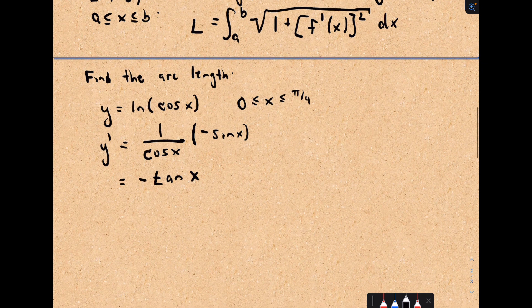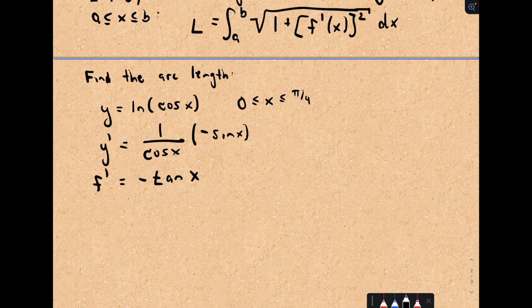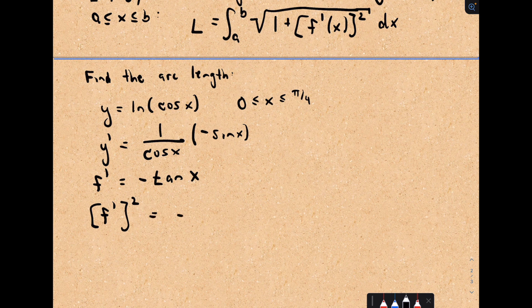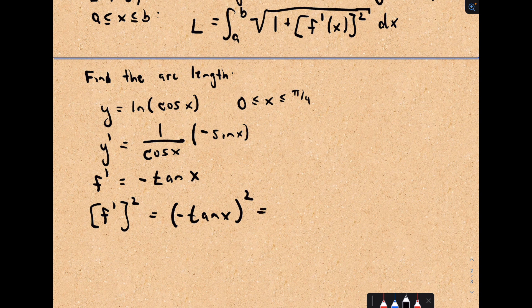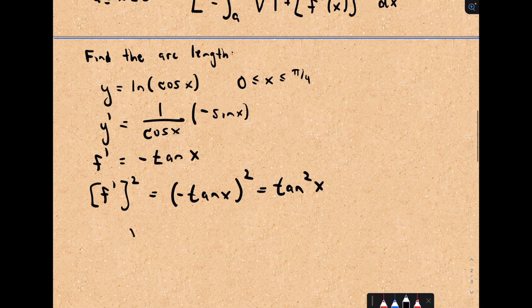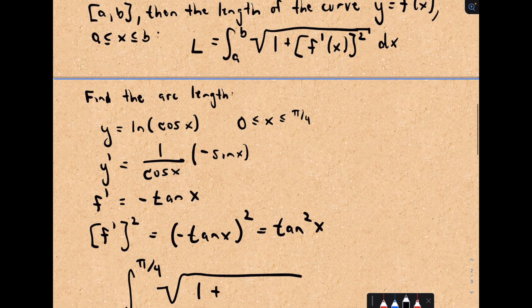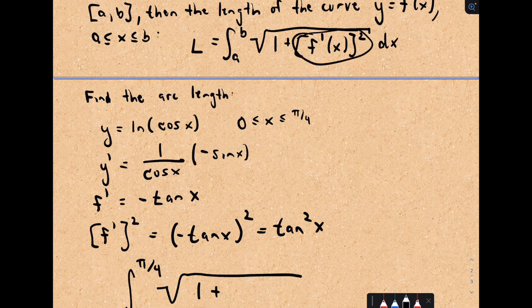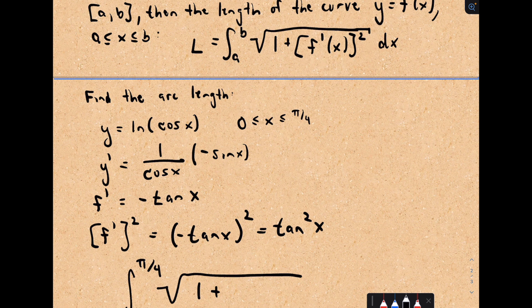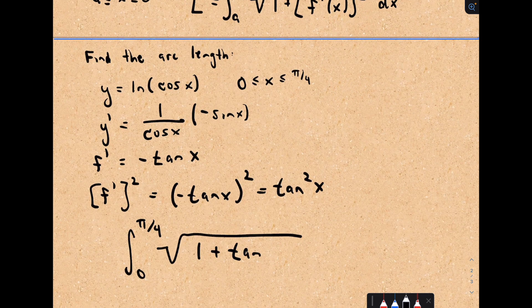Next, we'll have to square that. This is my y prime or my f prime. So f prime squared would be negative tangent of x squared, or tangent squared of x. Now I'm computing the definite integral from 0 to pi over 4. I've got 1 plus f prime of x squared, we got 1 plus tangent squared of x.